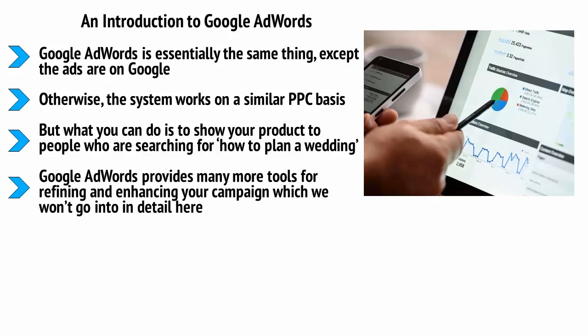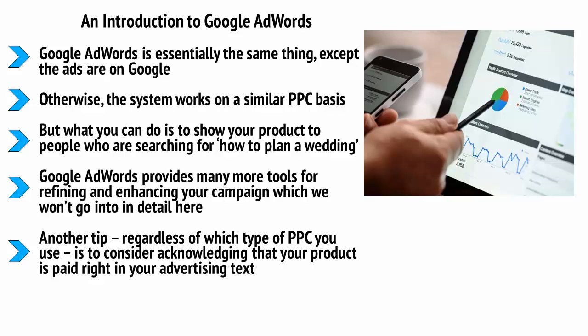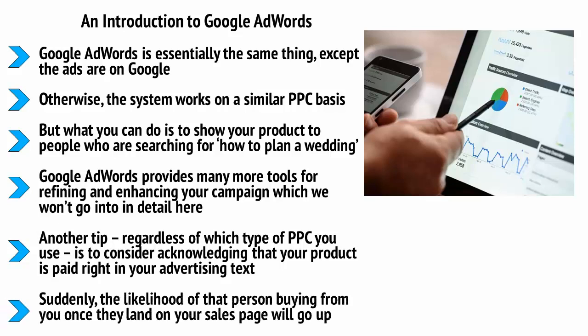Google AdWords provides many more tools for refining and enhancing your campaign. One example is the option to use negative keywords — terms that you want to exclude people from seeing your ads. For example, you can make sure that no one who includes the term 'free' sees your ad, as those people are unlikely to be willing to pay for your products. Another tip, regardless of which type of PPC you use, is to consider acknowledging that your product is paid right in your advertising text. You can even include the price by saying '$30 e-book on wedding planning.' You will prevent people from clicking the ad unless they're willing, at least in theory, to pay that much. Suddenly, the likelihood of that person buying from you once they land on your sales page will go up significantly, and as such, you should be earning a lot more.